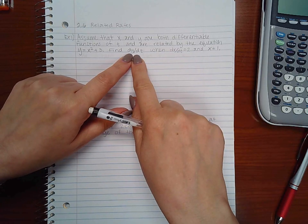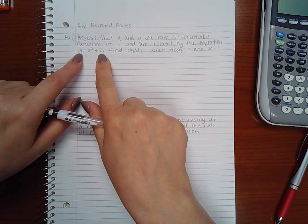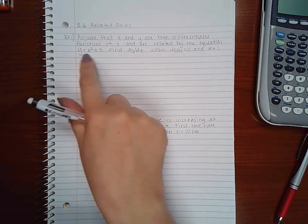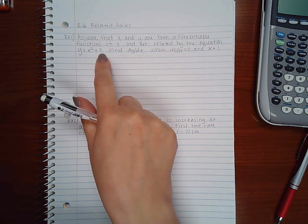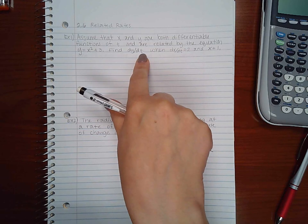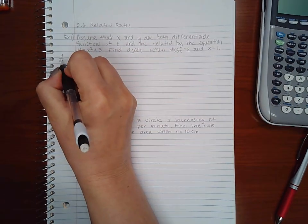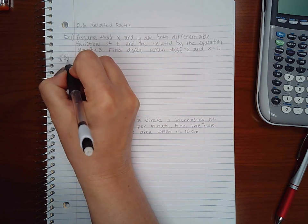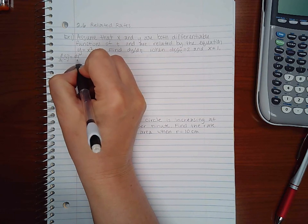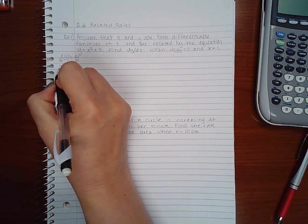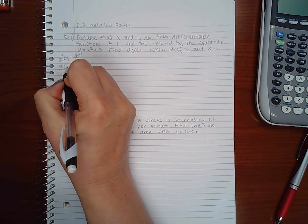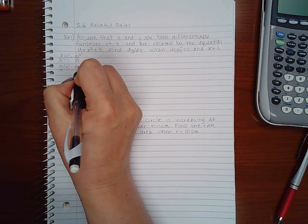So if we want dy/dt, that means we need to take the derivative of this equation. If I take the derivative of the equation with respect to t, what that means is that the derivative of x with respect to t will be dx/dt and the derivative of y with respect to t will be dy/dt.